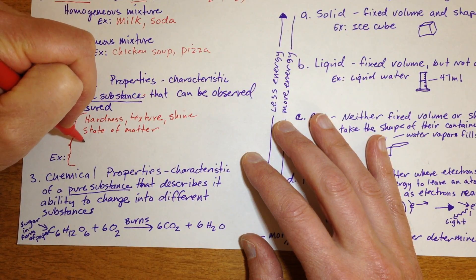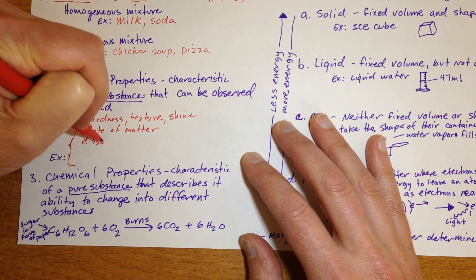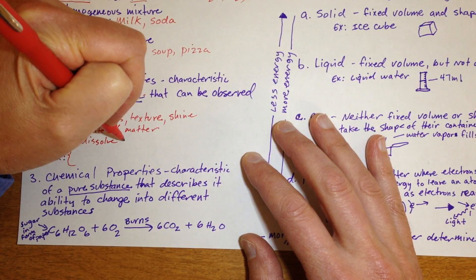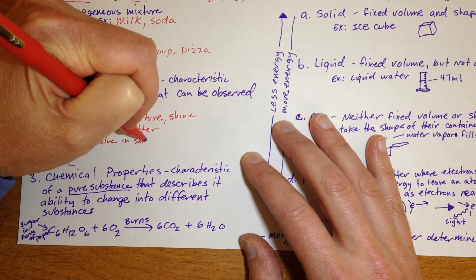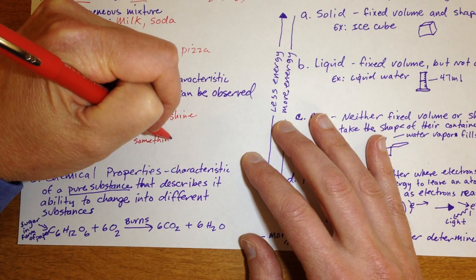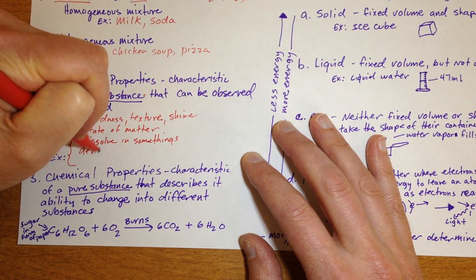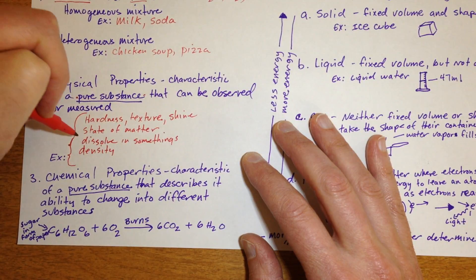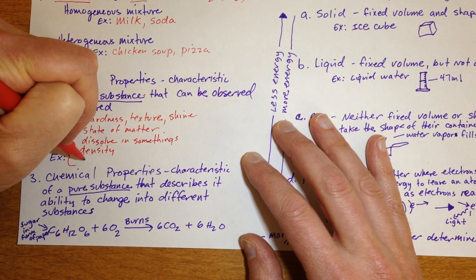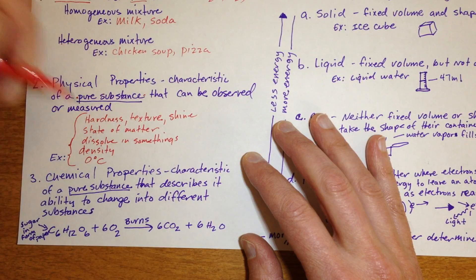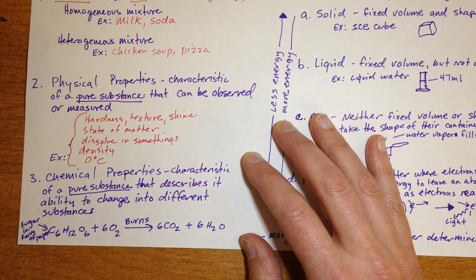Is it a solid, liquid, gas or a plasma, the ability to dissolve in something else, like salt dissolves in water, its density is a physical property. For example, also water freezing at zero degrees Celsius is a physical property of water.